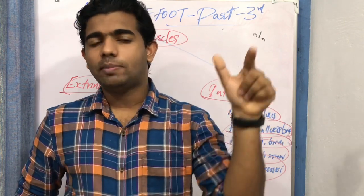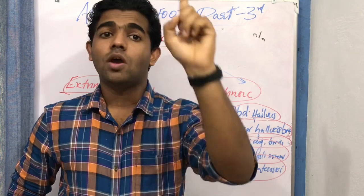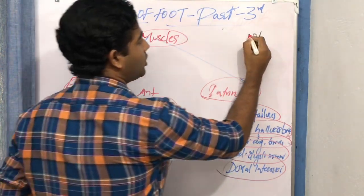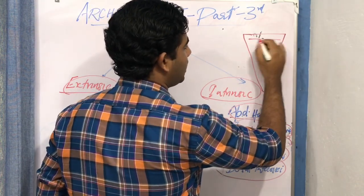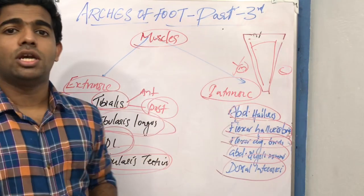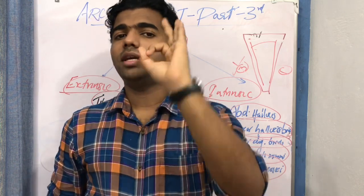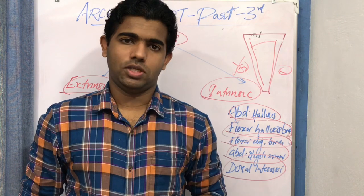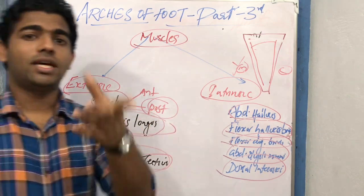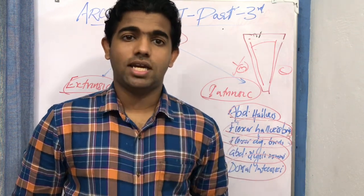Two key approaches: if plantar arches is asked, explain the arches, stability, function, weight distribution, and muscular role, contributing less to plantar aponeurosis. If plantar aponeurosis is asked, focus on the aponeurosis and mention the arches briefly. For diagrams, draw the foot with the medial longitudinal arch, lateral longitudinal arch, and transverse arch, marking medial and lateral sides clearly. Remember: the talus is the keystone of the longitudinal arch and the medial cuneiform is the keystone of the transverse arch. The posterior tibialis muscle has the greatest role in arch support.